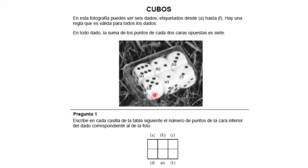El dado A en la cara superior tiene el número 6. Para sumar 7, en la cara inferior debe estar el número 1. El dado B tiene en la cara superior el número 2. Para sumar 7, en la cara inferior debe estar el número 5.